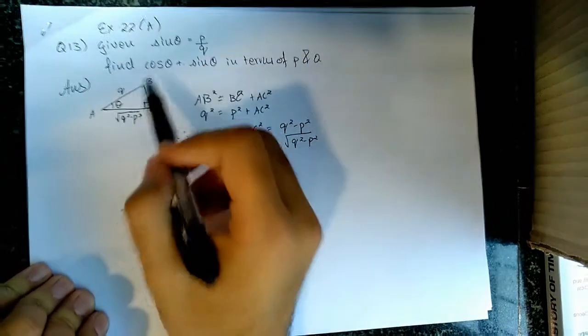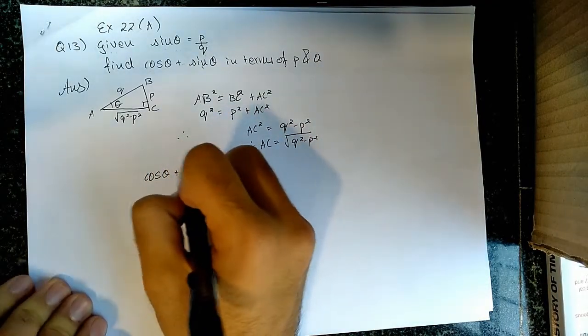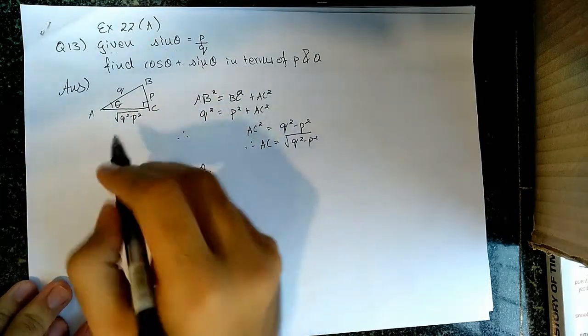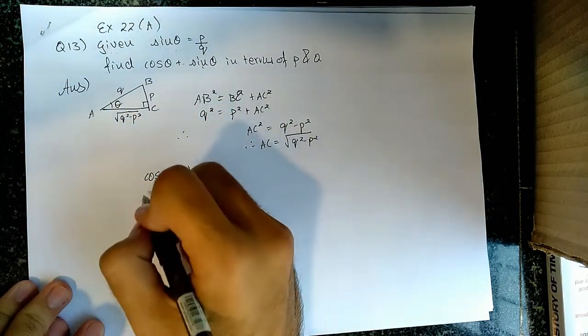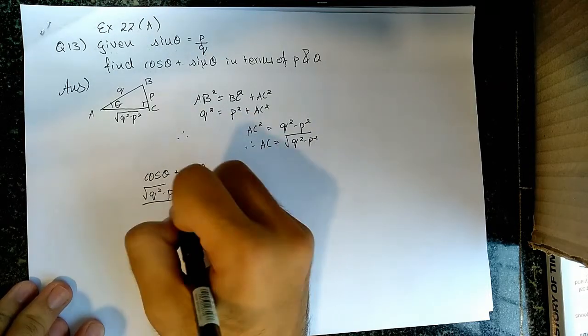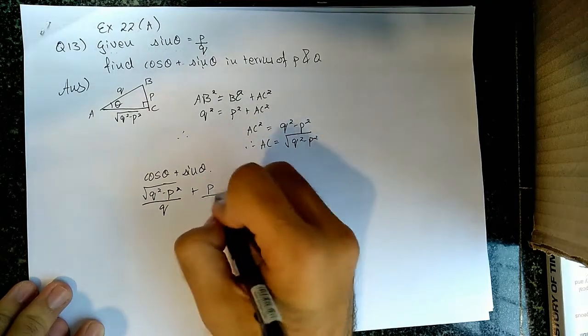They have asked us to find cos theta plus sin theta. From the triangle, we can see that cos theta equal to the base upon the hypotenuse, which is root of q square minus p square upon q, and sin theta is p upon q.